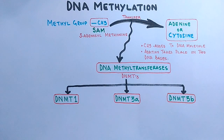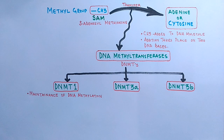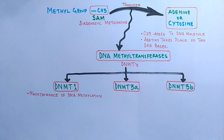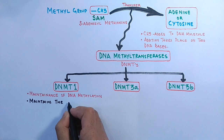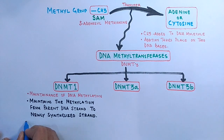DNMT1 has the capability to maintain the pattern of methylation within the cell — this is the maintenance of DNA methylation. For example, if a DNA molecule has 20 bases methylated (15 cytosine and 5 adenine), after replication the newly synthesized DNA molecule is methylated at those same 20 positions, maintaining methylation from parent to daughter DNA. DNMT1 requires hemimethylated DNA to work.